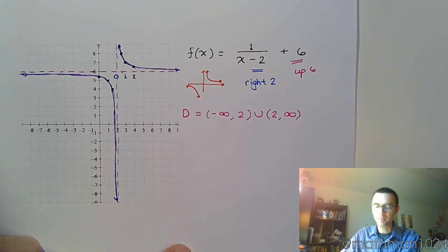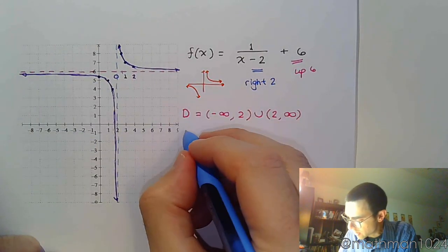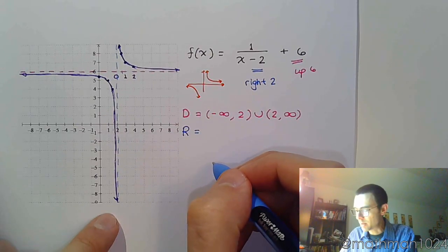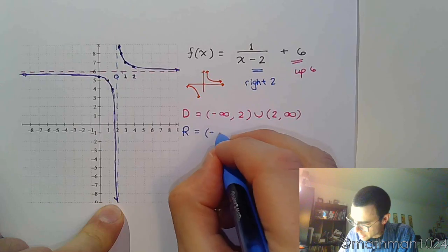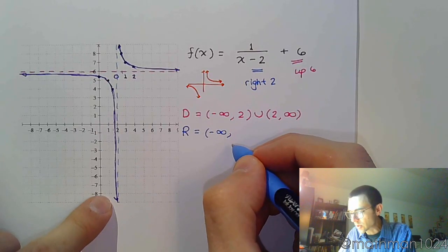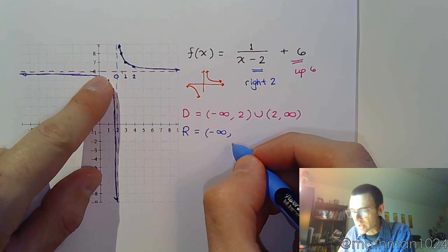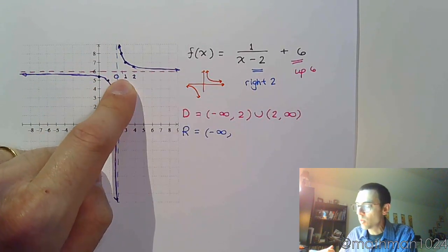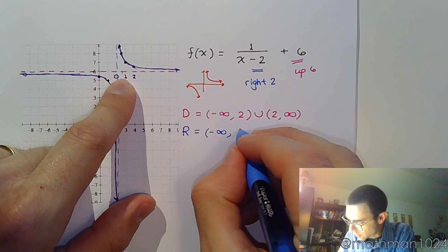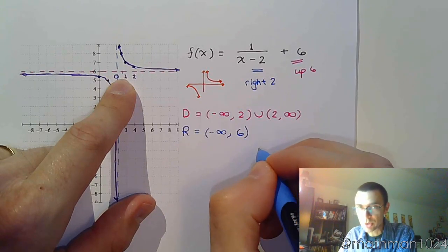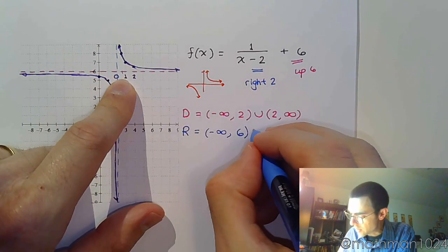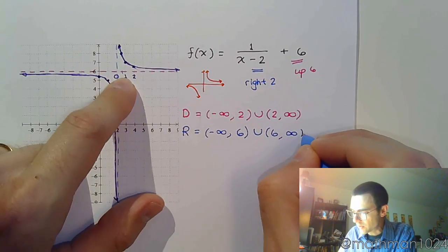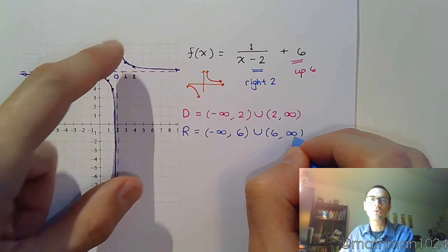Then the range — range is the set of all y values, going from bottom to top. We're coming from negative infinity, going up and up. Then we have a weird situation at y equals 6, so we go up to almost 6, then union from 6 to infinity to get the rest of the graph as it goes up and up.